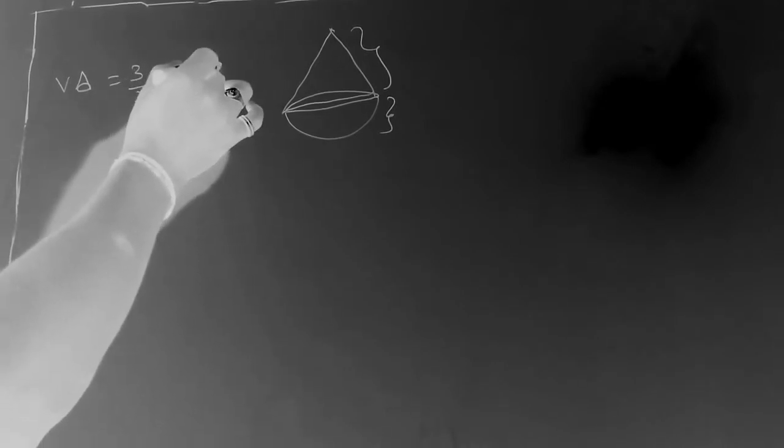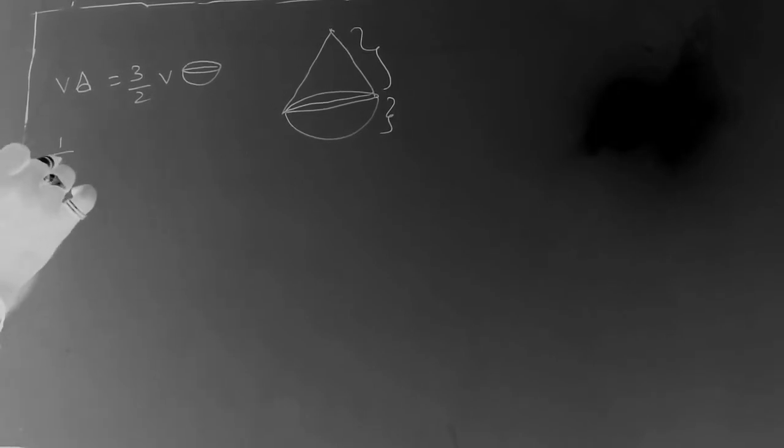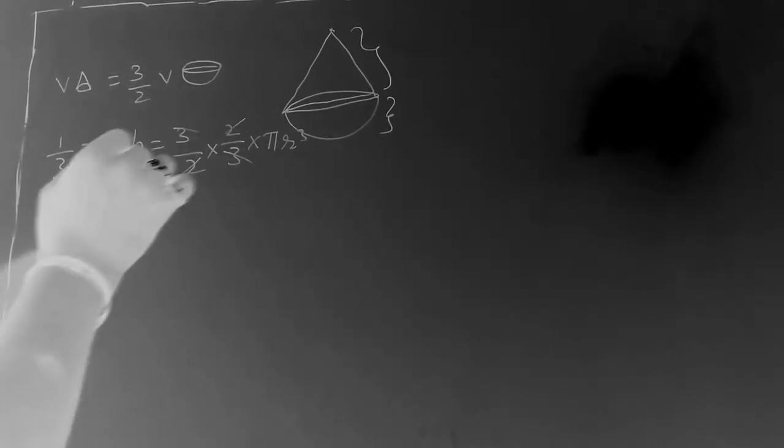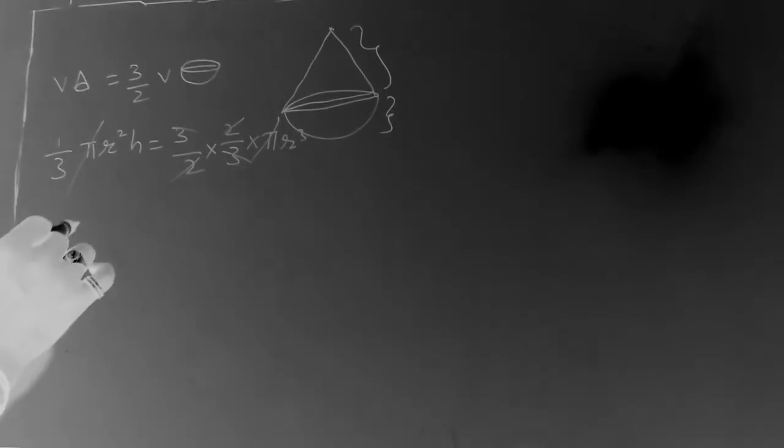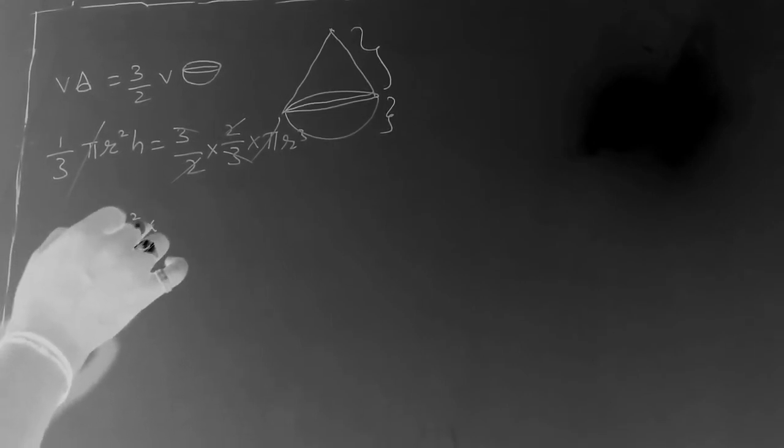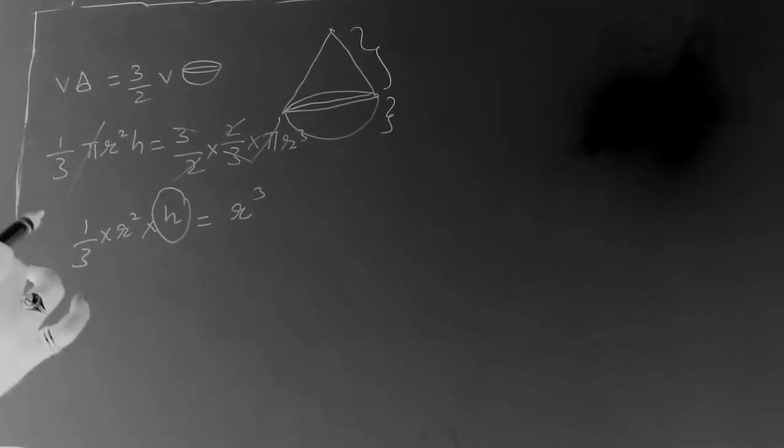First we have to find the height of the cone. The given condition is that the volume of the cone is equal to 3/2 times the volume of the hemisphere. The volume of a cone is (1/3)πr²h and the volume of a hemisphere is (2/3)πr³. Setting them equal with the condition, the 3s cancel and the 2s cancel, leaving (1/3)r²h = r³. We need to find h.